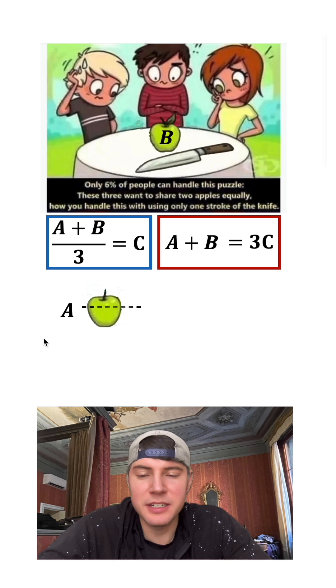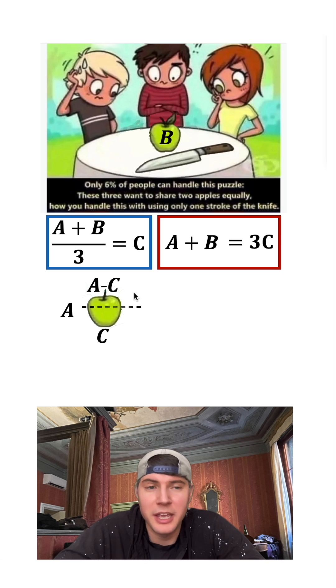I want to make a cut such that the volume below the cut is equal to C and the volume above the cut is going to be equal to A minus C, because it's the whole apple minus this bottom piece.